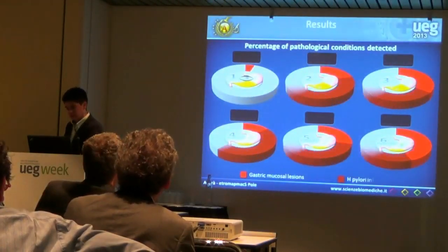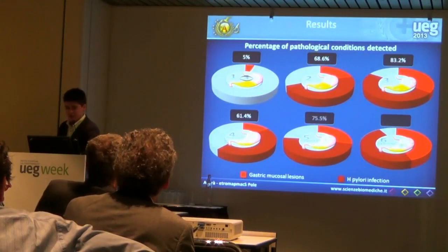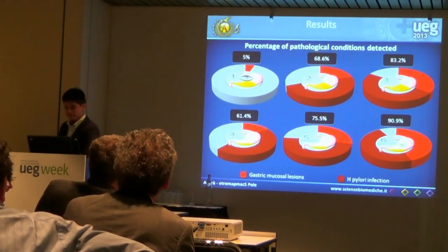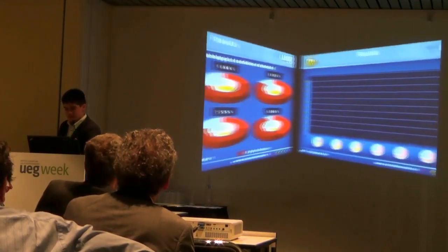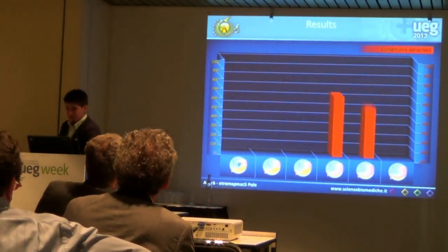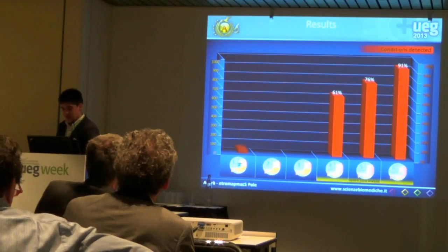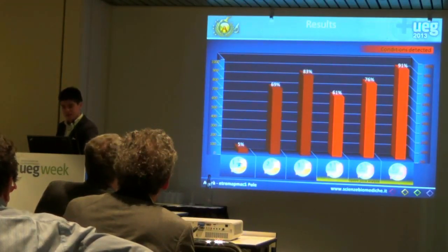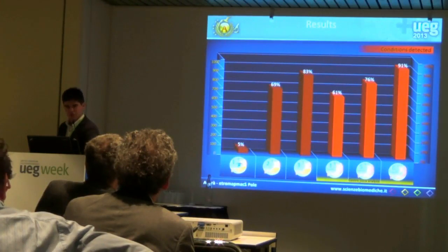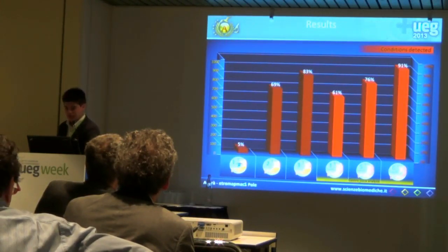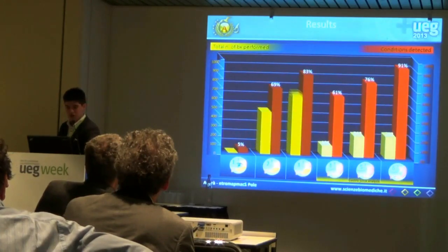How many pathological conditions were identified by each strategy? Diagnostic strategies based on real-time gastric juice analysis yielded detection rates comparable or even higher than those of strategies including biopsies for all patients but without gastric juice analysis — despite a four-fold lower number of biopsies performed.